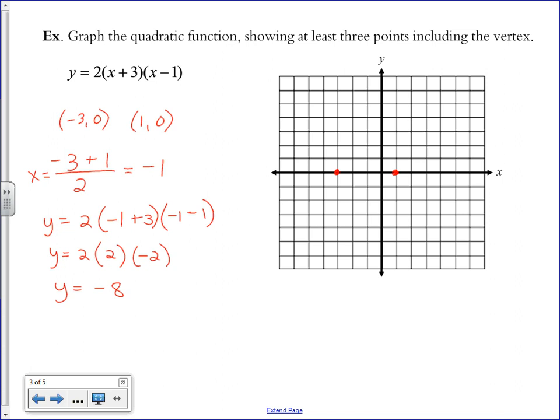And then I'm going to find the point, which is my vertex, negative 1, negative 8. 1, 2, 3, 4, 5, 6, 7, 8. A little bit off my graph.